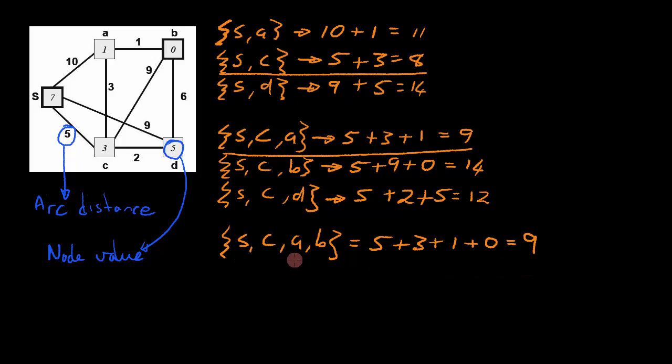This now tells us that the shortest path from node S to node B is via node C, A and then to B. And this will give us a total distance value of 9.